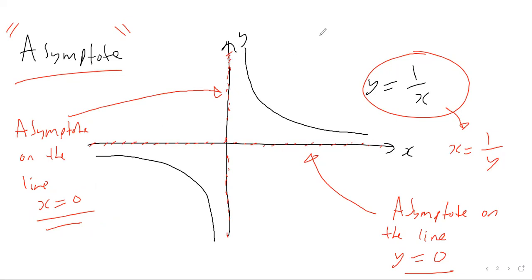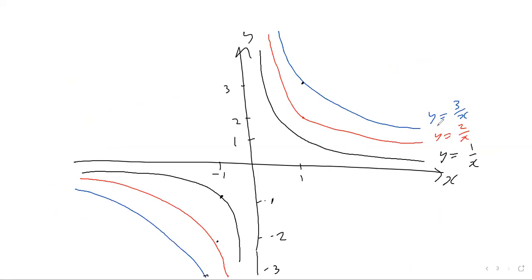To determine the y equals zero asymptote, rearrange the equation to get x equals 1 over y. When y is zero, 1 divided by zero is undefined, so the graph never crosses through y equals zero. The general rule is: for a fraction to be defined, the denominator must be non-zero. Set the denominator equal to zero to find the asymptotes. For y equals a over x, the asymptotes are always x equals zero and y equals zero.